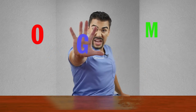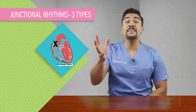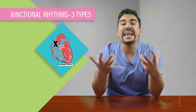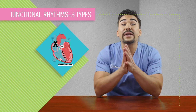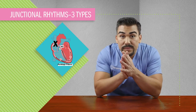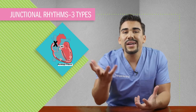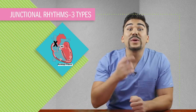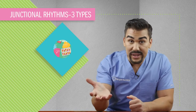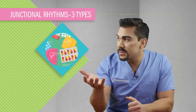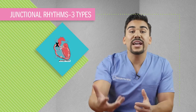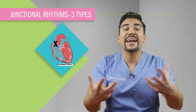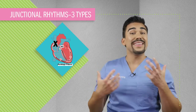OMG! The main battery in the heart, the SA node, is not working. So what are we going to do? Well, every plan A always has a plan B — and we're talking about the AV node here, the backup pacemaker in the heart.